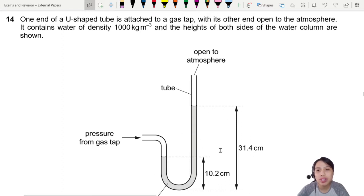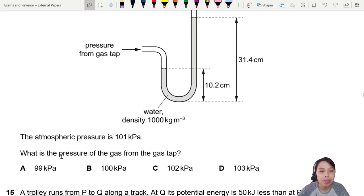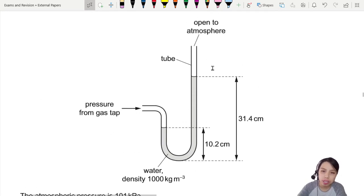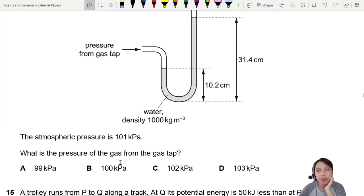This is a manometer we call it, one way to measure pressure. Atmospheric pressure is 101 kPa. What is the pressure from the gas tap? If you ever have some kind of pressure to measure, just get a curved tube, fill it with water or mercury, and you can figure out what the pressure is.